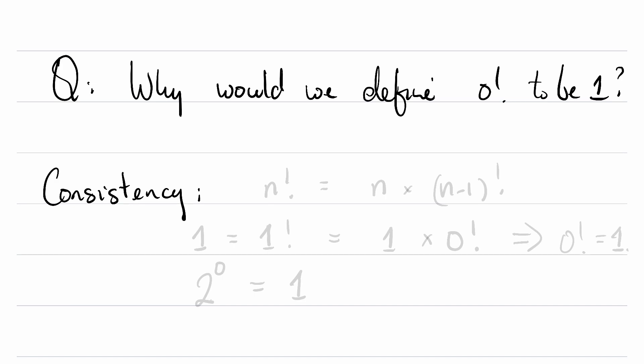We want to extend what is a fairly natural definition of n factorial to the number 0. We want to do this in a way that feels consistent with what came before. So for example, n factorial is going to be n times n minus 1 factorial.